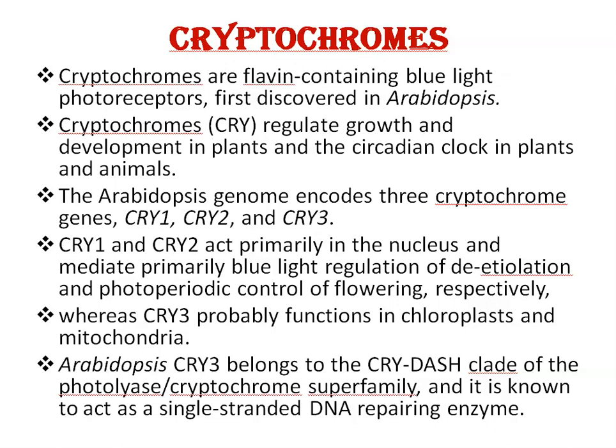Cryptochromes are flavin-containing blue light photoreceptors, first discovered in Arabidopsis. Cryptochromes, abbreviated as CRY, regulate growth and development in plants and the circadian clock in both plants and animals. The Arabidopsis genome encodes three cryptochrome genes: CRY1, CRY2, and CRY3.